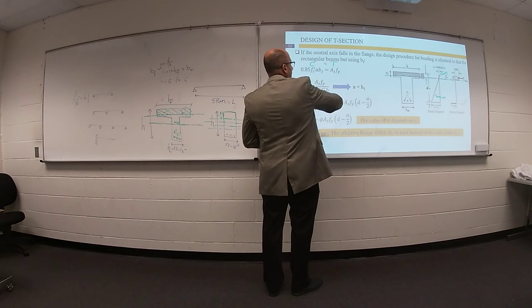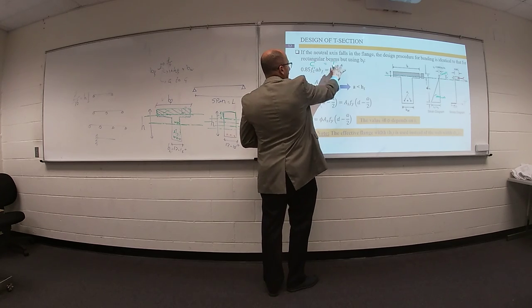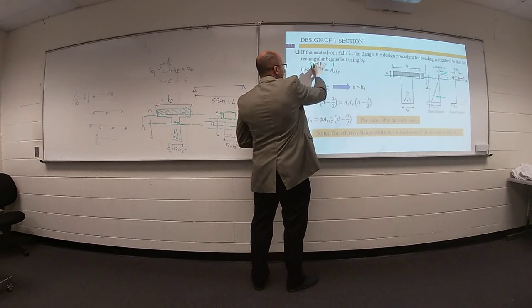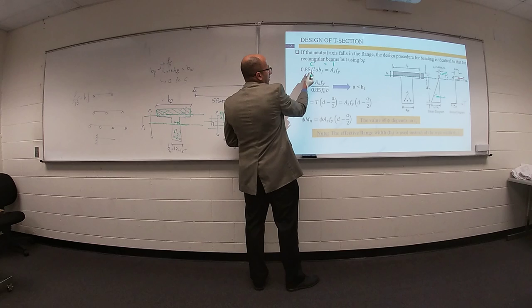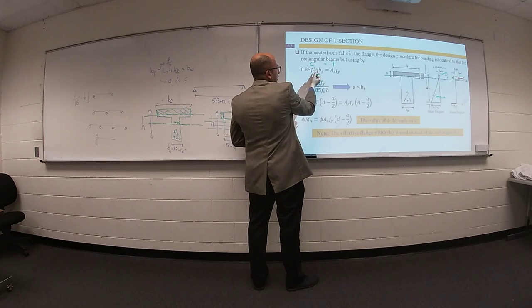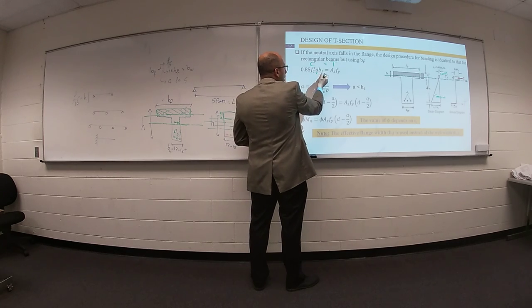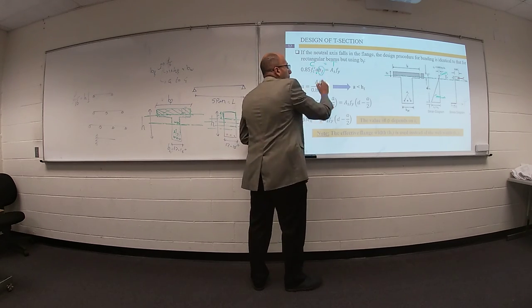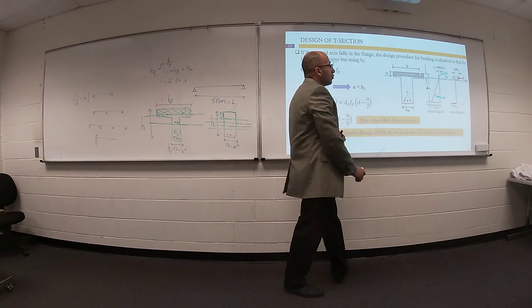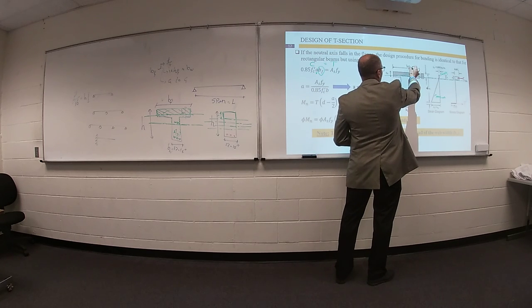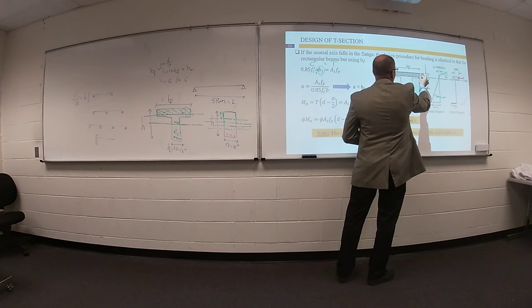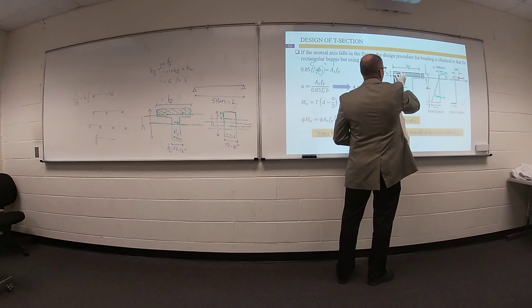T equals areas times T, F, E. Your C equals 0.85 F prime C times A, but your width will be your B flange — the total width of your flange.